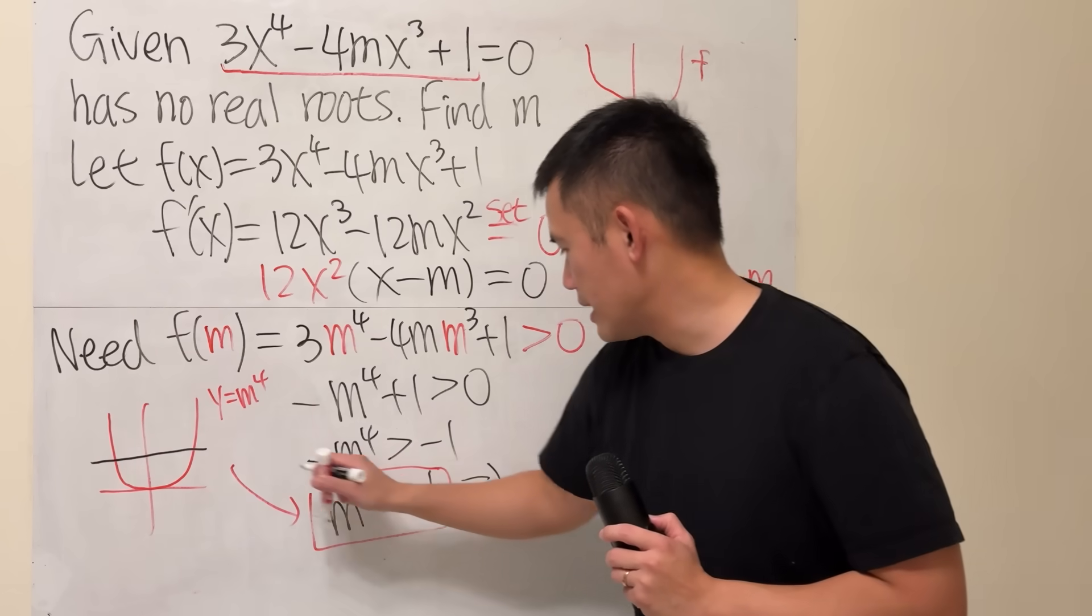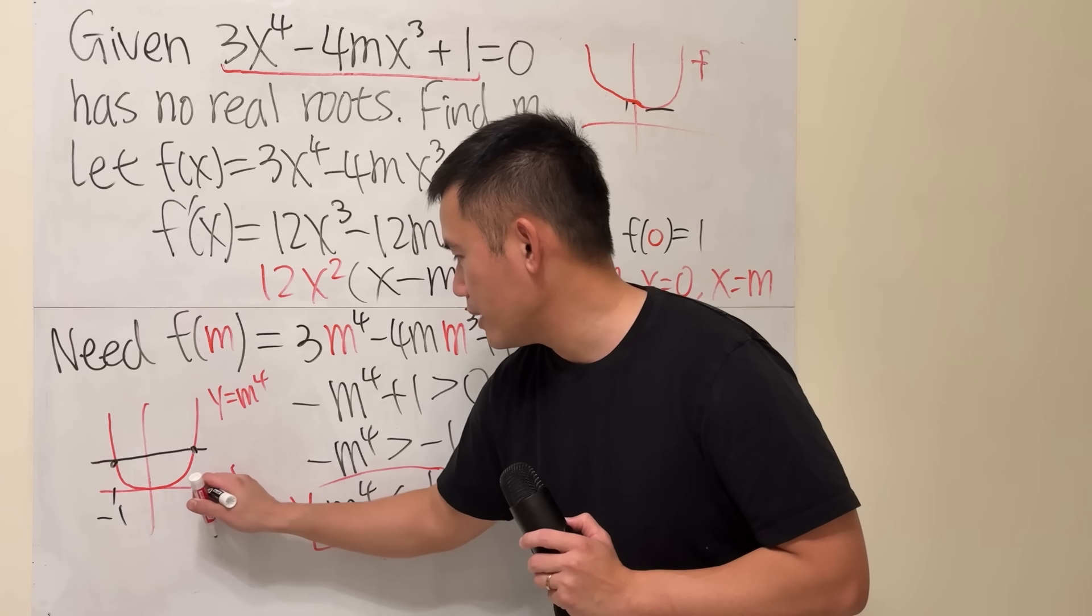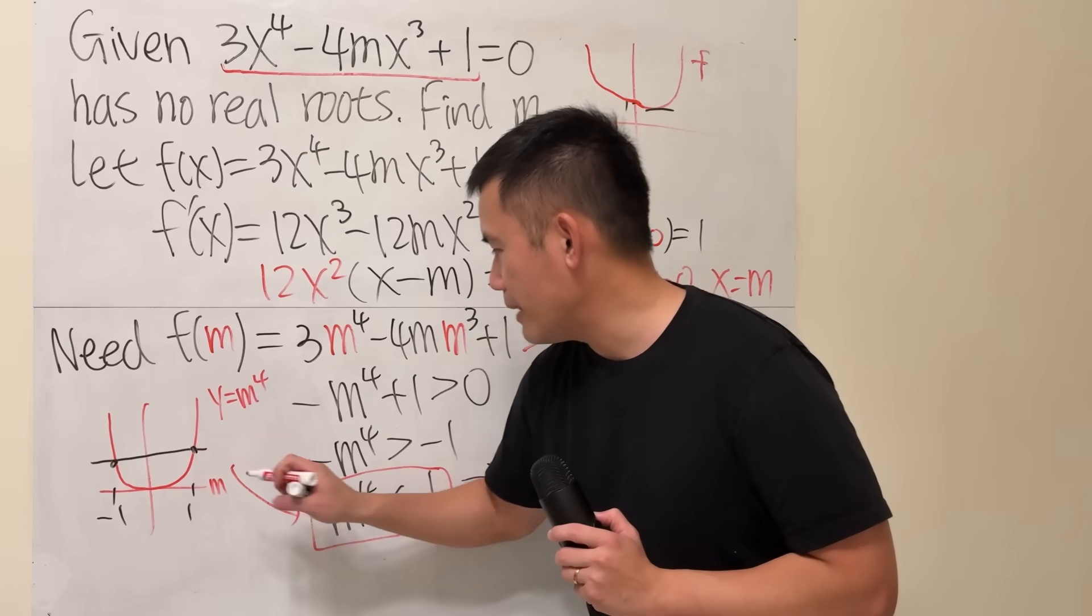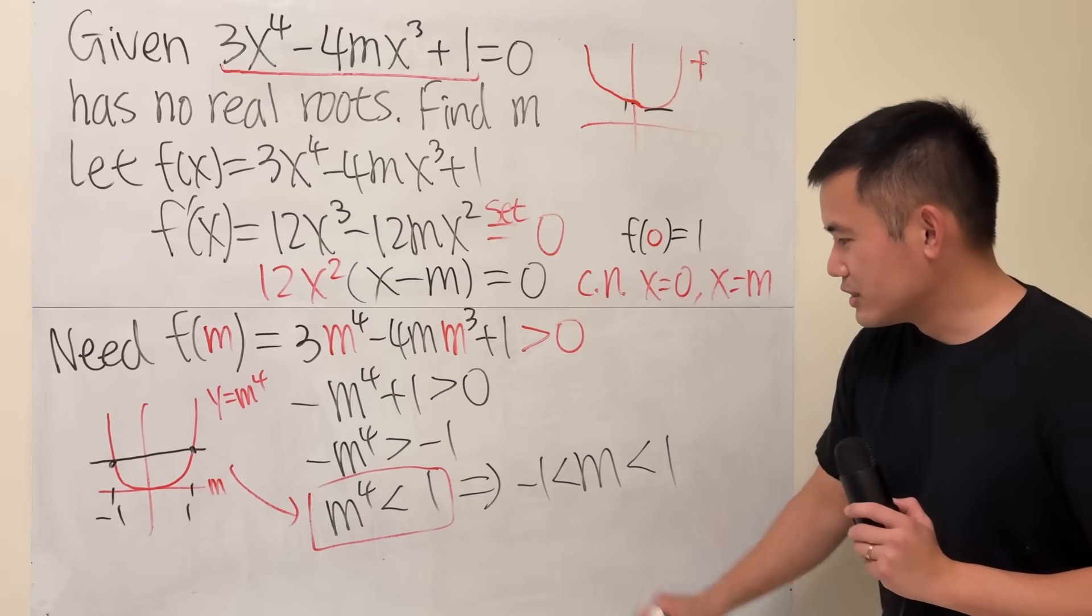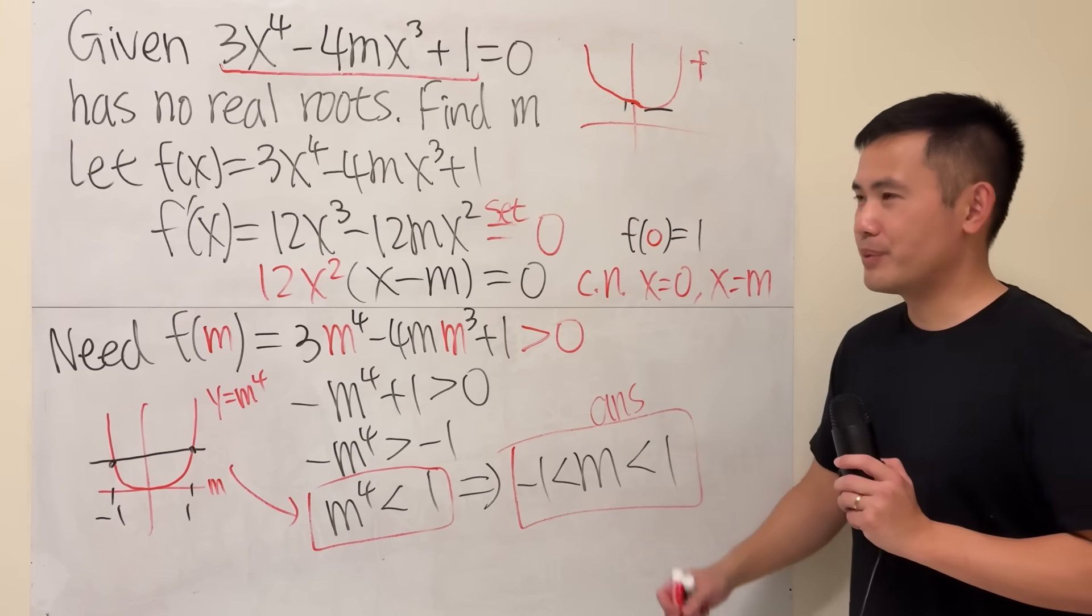We want to be less than 1, so the intersections, it's in between negative 1 and 1. This is the m axis. This right here is the answer. Pretty cool.